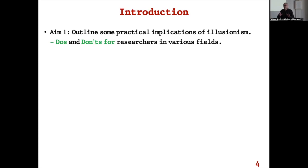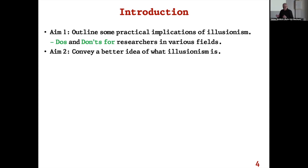I'm going to present some do's and don'ts for researchers in various fields, all spelled out on the handout. Each of these could probably do with a little lecture in itself, but I'm going to run through them quickly to give you a sense of the broad picture. One reason for doing this is to give a better idea of what illusionism actually is, since any definition gets bogged down in questions about qualia, phenomenal properties, and what-it-is-likeness.